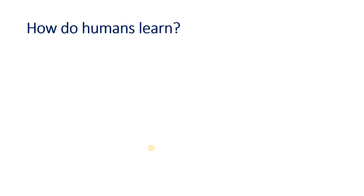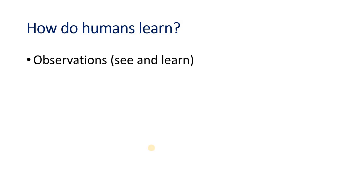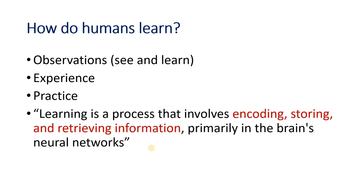Now the next question is how do we learn? How do humans learn? First and foremost, as a child, you must have seen how a child absorbs and learns. We see and learn, or we experience and learn, or we practice and learn. These are the primary modalities through which human beings learn. I can define this learning process as a process that involves encoding, storing and retrieving of information primarily in the human brain or neuron network.